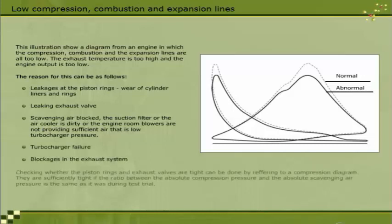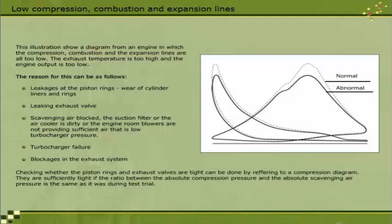Checking whether the piston rings and exhaust valves are tight can be done by referring to a compression diagram. They are sufficiently tight if the ratio between the absolute compression pressure and the absolute scavenging air pressure is the same as it was during test trial.